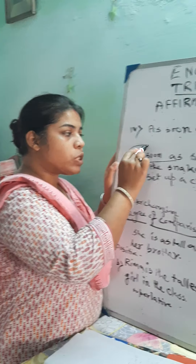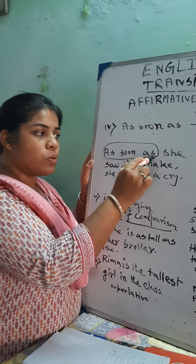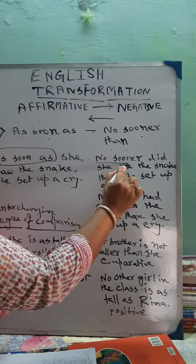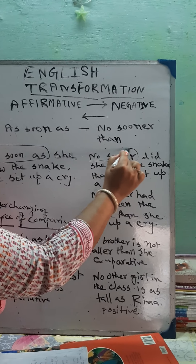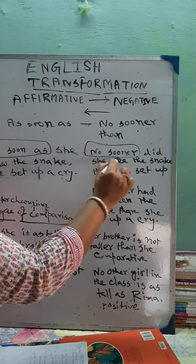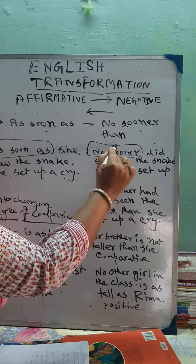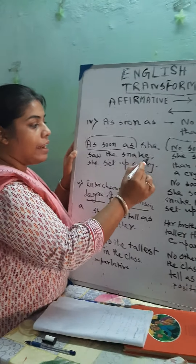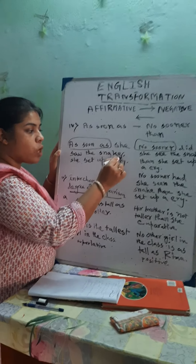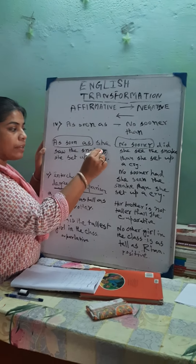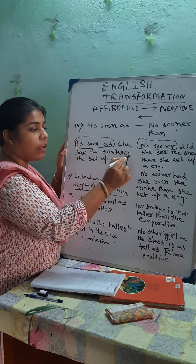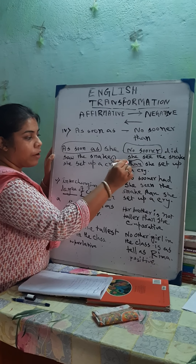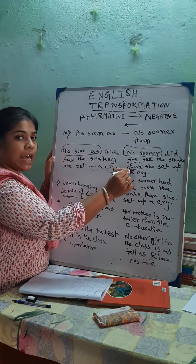In place of 'as soon as,' we will write 'no sooner.' And in place of the comma — the punctuation mark — we write 'than.' Then the next part of the sentence follows.